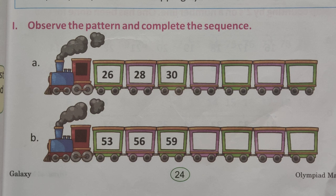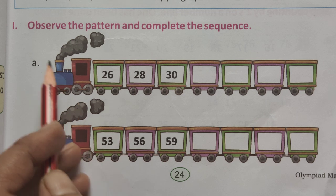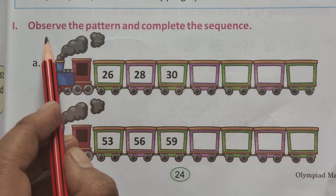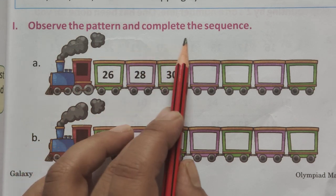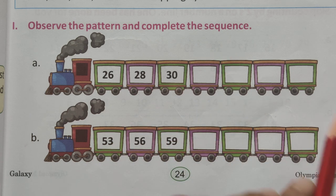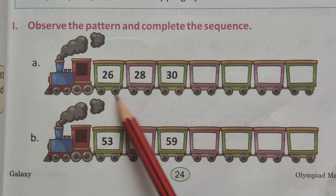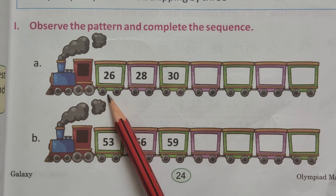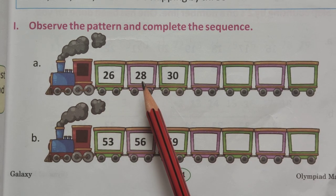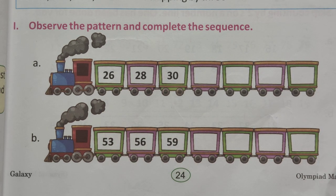Please carefully listen to me. My first question is, observe the pattern and complete the sequence. Hameen kuch numbers diya hoi hai. Dekho, yaha pe ek train beni hoi hai. Uske andar boxes mein numbers di hoi hai. 26, 28, and 30.